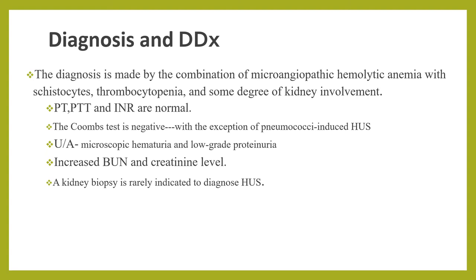If there is no history of diarrheal prodrome or pneumococcal infection, then evaluation for genetic forms of HUS should be considered, because those patients are at risk for recurrence, have worse prognosis, and can benefit from different therapies. Other causes of acute kidney injury associated with microangiopathic hemolytic anemia and thrombocytopenia should be considered and excluded — for example, SLE, malignant hypertension, and bilateral renal vein thrombosis can cause microangiopathic hemolytic anemia, thrombocytopenia, and anemia. Kidney biopsy is rarely indicated to diagnose HUS.